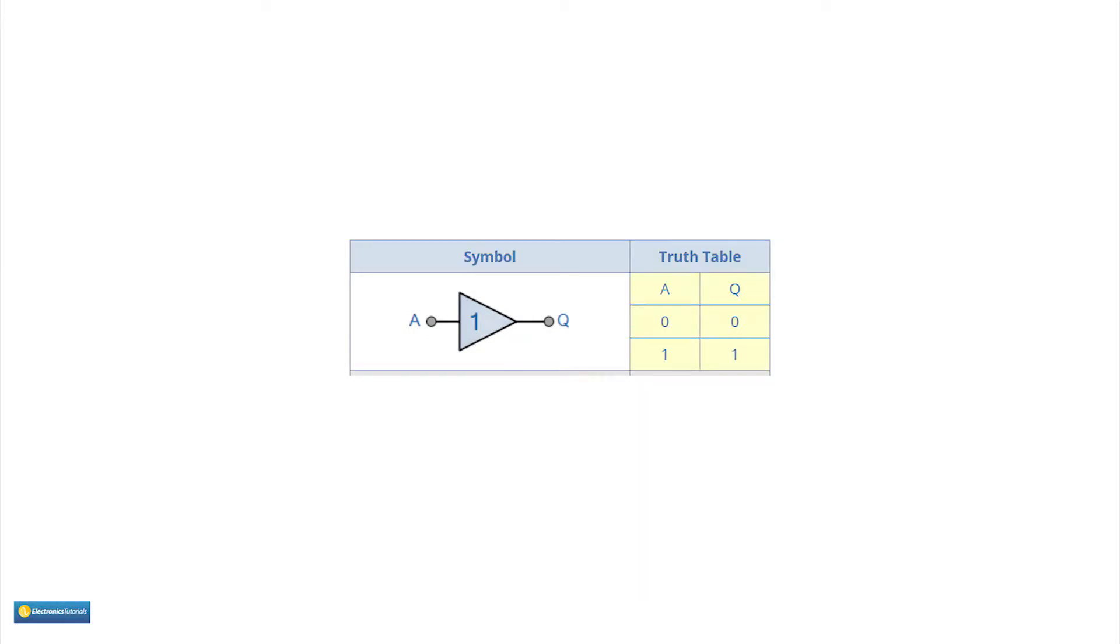Here is what is called the truth table for the buffer. It shows that when the input is 0 the output is 0, and when the input is 1 the output is 1. This may not seem to be too useful, but is offered here for completeness.